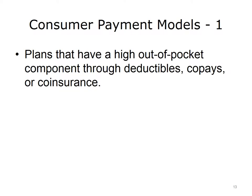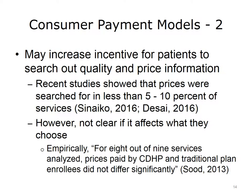Another topic in payment models concerns the involvement of consumers. Instead of individuals choosing providers and receiving services paid for by the insurer, these models intend to have the consumer pay a portion of the cost. To do this, plans incorporate higher out-of-pocket expenses through deductibles, co-pays, and co-insurance. The goal is to increase the incentive to search out quality and price information and decrease unnecessary services. Quality and price information would therefore be needed from the data analytics system. Recent studies have shown that prices were searched for in less than 5–10% of services when these types of plans have been implemented.